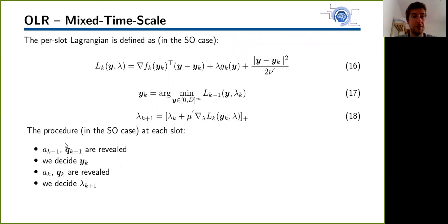To solve the mixed time scale model, we need the per-slot Lagrangian, which is defined similarly to the Lagrangian previously. Here we can see linearized objectives, the constraint, and the regularizer. The procedure is very straightforward. At each slot first, we take advantage of available information, so demand and prices at previous time slot. Then we make the decision. Then we reveal demand and prices at the current time slot, and only then we make a dual update.